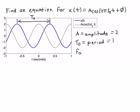So f₀, the frequency, we know is 1 over the period — it's the inverse of the period. In this case, that will be 1 hertz. The period is in seconds, and the frequency is in hertz.